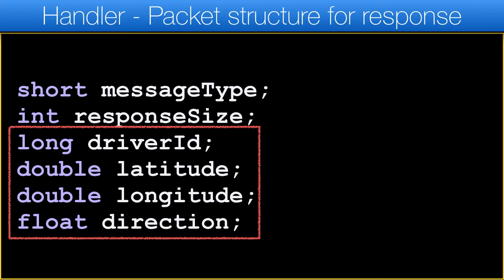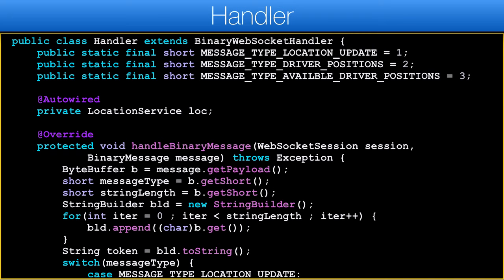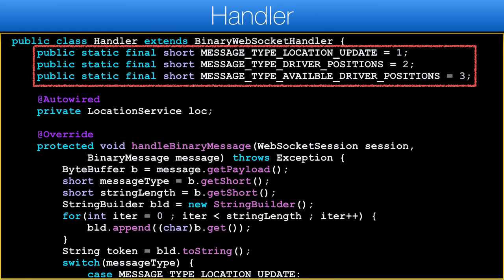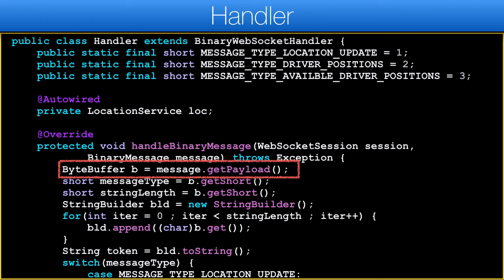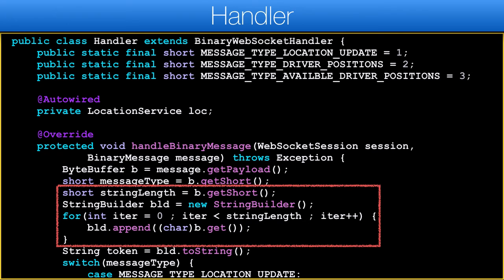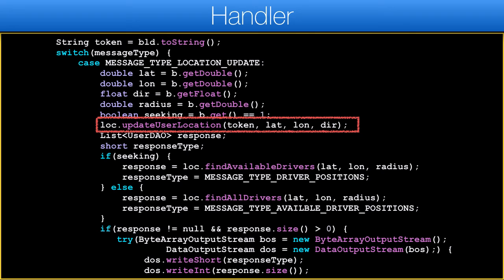Now that we understand the protocol, let's dig into the code that implements it. The handler class is a binary WebSocket handler that receives callbacks on incoming packets. These are constants used in the binary protocol to communicate the type of request or response. This is a callback for a binary message from the client. The API works with NIO's ByteBuffer, which allows us to run through a request efficiently. We get the length of the user token string and the byte array — again using bytes instead of chars since the token is 100% ASCII. Assuming this is a location update, we pull out the data and update the user object.